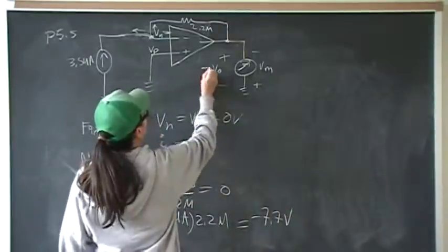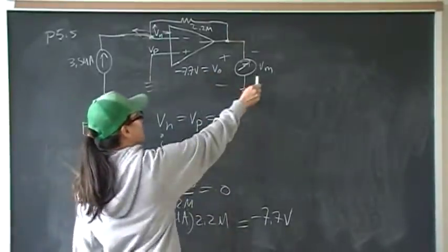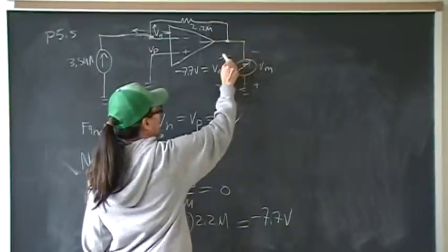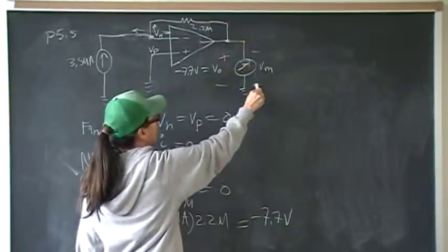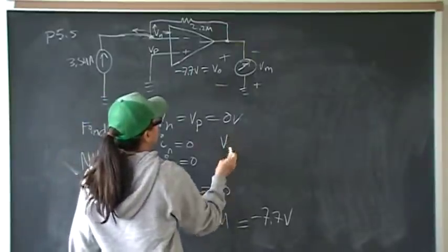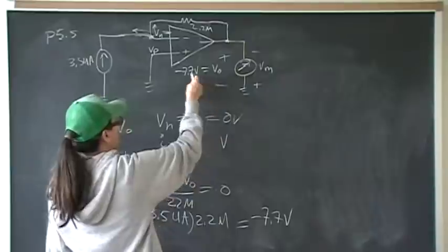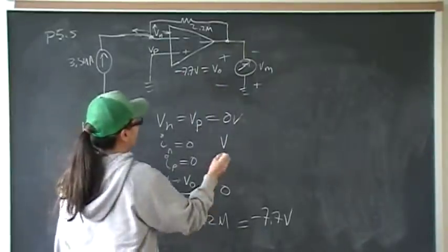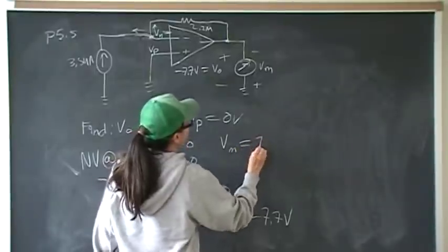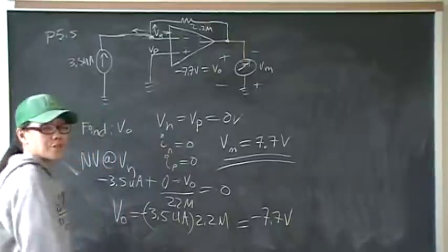So Vout equals negative 7.7 volts. But notice, when we're taking our voltmeter reading, we have the negative terminal on this end where Vout is, and the positive terminal where the negative terminal is. So the voltmeter, since its polarity is opposite to Vout, will read the opposite polarity. The voltmeter reading is positive 7.7 volts, and that's the answer.